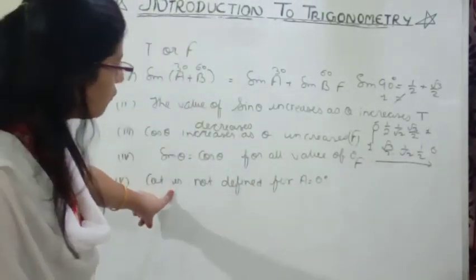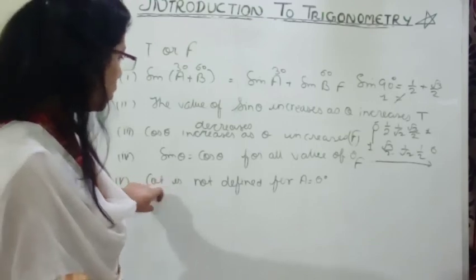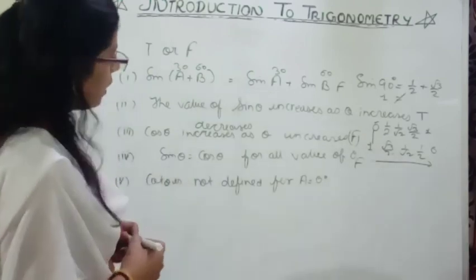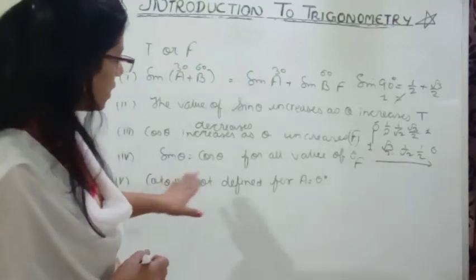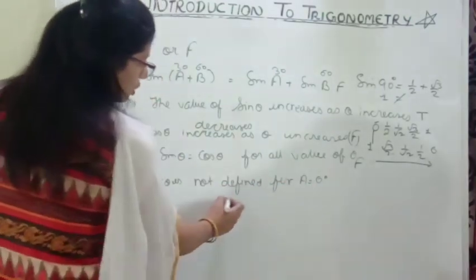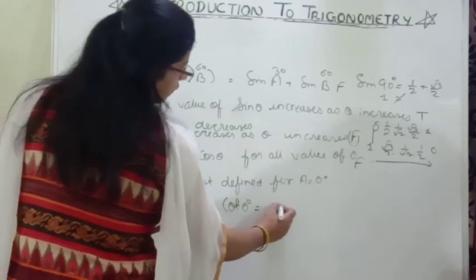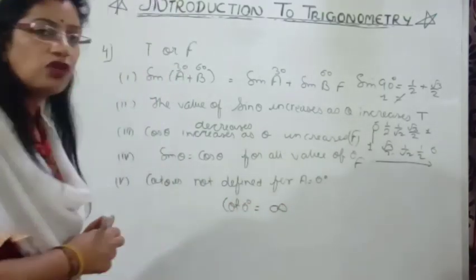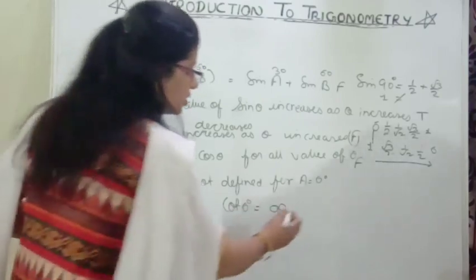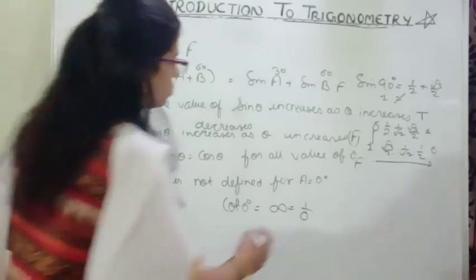Fifth: cos θ is not defined for θ = 0°. Cos 0° = 1, which is defined. Wait — actually, tan θ is not defined for 0°... here the statement says cos θ is not defined. Cos 0° is 1, not infinite. However, the teacher concludes this is true, interpreting the statement in the context of 1 upon 0 being undefined.